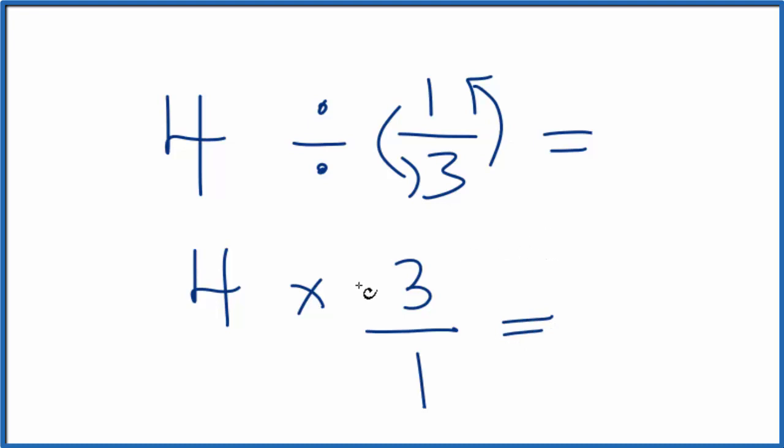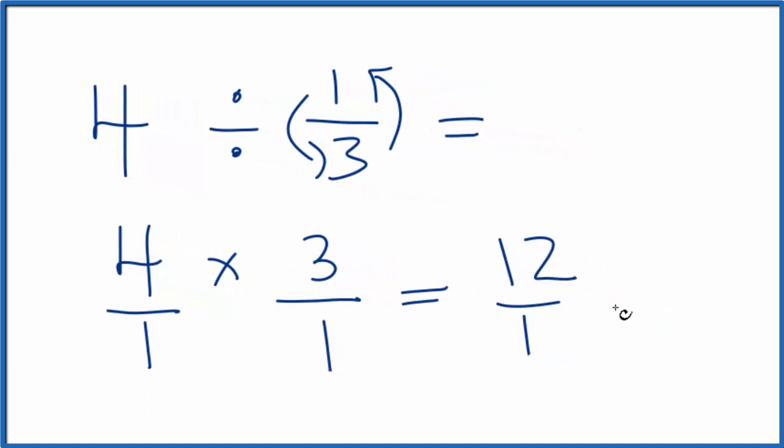Now you can think about this as four over one. Four over one is still four. We're just dividing by one. But four times three, that gives us twelve. One times one, that gives us one. Twelve over one is just twelve. So four divided by one-third, that ends up being twelve.